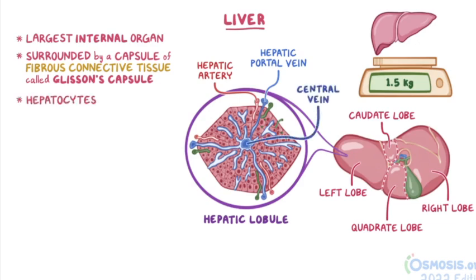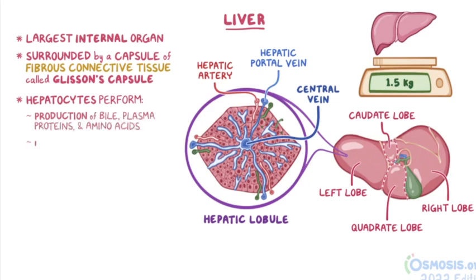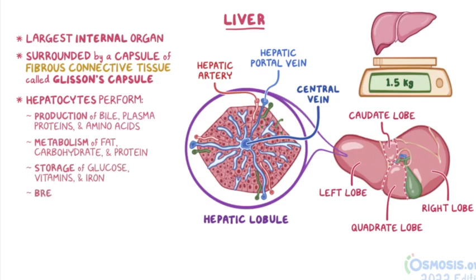Hepatocytes are the main functional cells of the liver that perform a large variety of functions, including the production of bile, a number of plasma proteins, and non-essential amino acids; the metabolism of fat, carbohydrate, and protein; the storage of glucose, vitamins, and iron; and the breakdown or detoxification of metabolic waste products, drugs, and toxins.